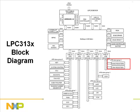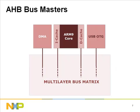Slave group 4 hosts the NAND and DMA registers. Connecting all these blocks together is the multi-layer AHB bus matrix. There are four interfaces on the master port: DMA, ARM 926 instruction port, ARM 926 data port, and USB OTG.